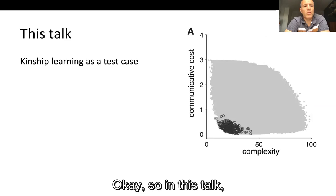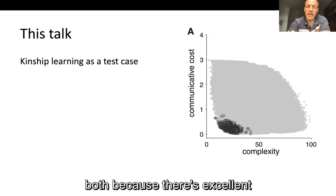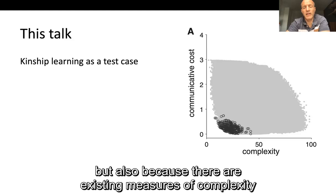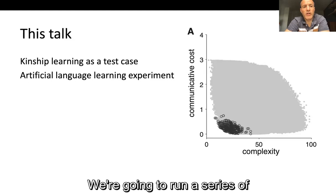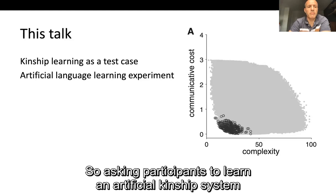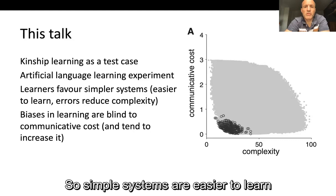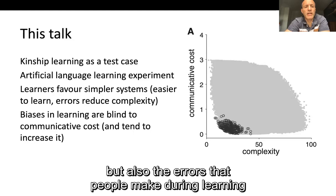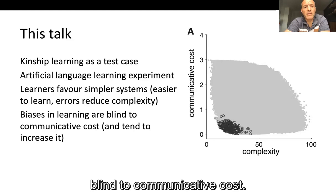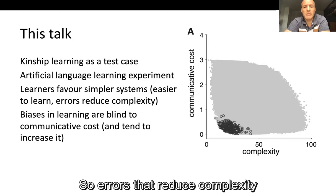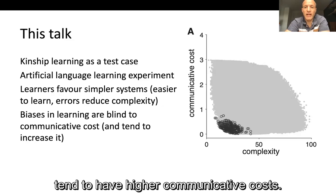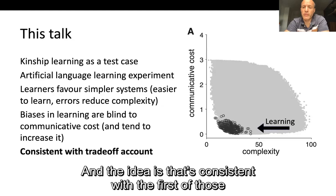In this talk, we take kinship learning as a test case, both because there's excellent cross-linguistic data available, and because there are existing measures of complexity and communicative cost we can apply to our experimental data. We run a series of artificial language learning experiments asking participants to learn an artificial kinship system. Our results suggest that learners favour simpler systems — simple systems are easier to learn — and the errors people make during learning tend to reduce complexity, but are blind to communicative cost, tending to increase it. That's consistent with the first, trade-off-based account.